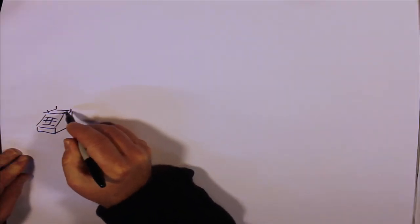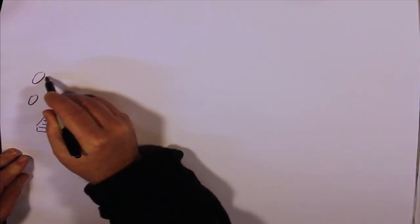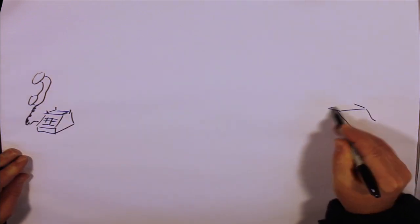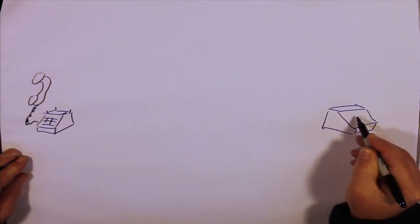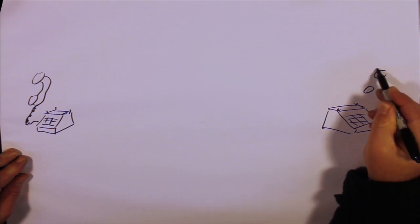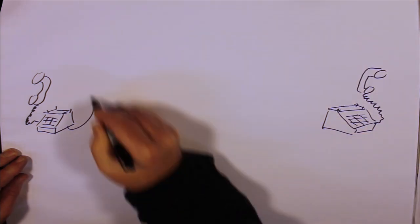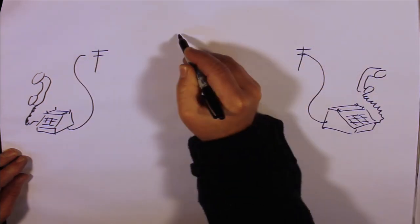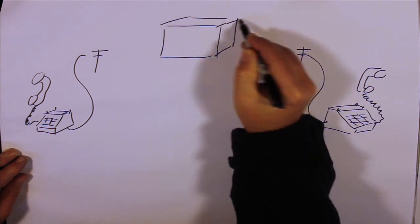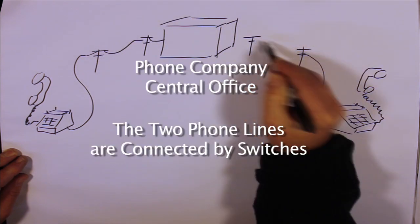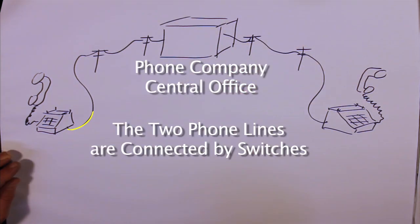This is in direct contrast to the telephone network, such as when you place a call, a direct and dedicated path is switched into place, making a connection between you and the phone you are calling. This dedicated line is not shared with anyone else while your phone call is taking place.